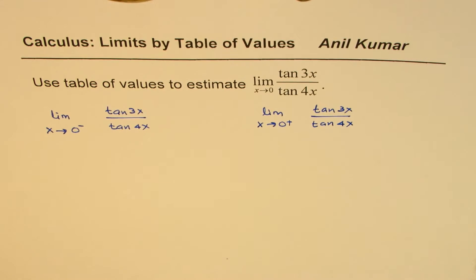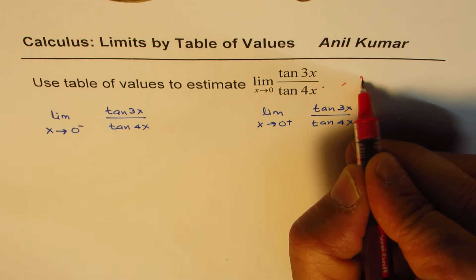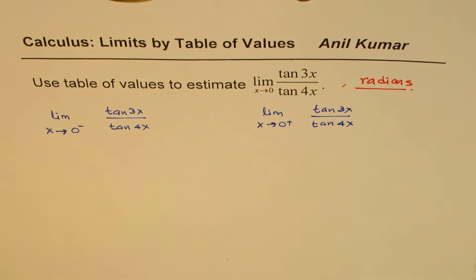Now note, whenever you do trigonometric functions, the angle should be in radians. So we are working in radians. Remember that. So set your calculator to radians when you do this work.